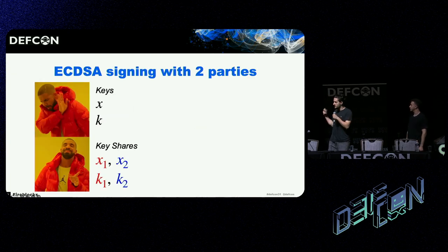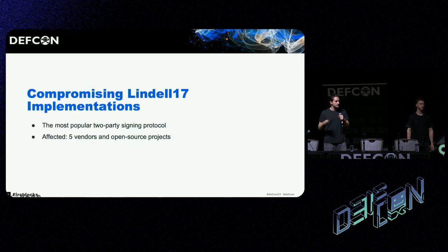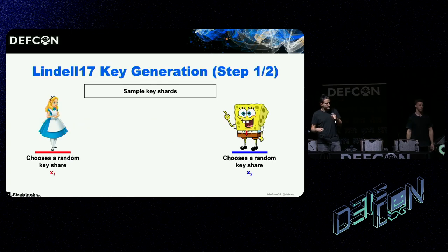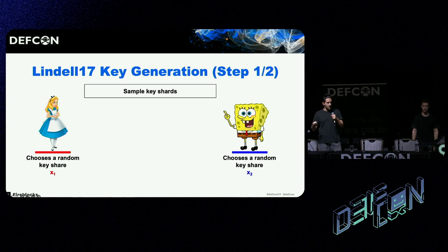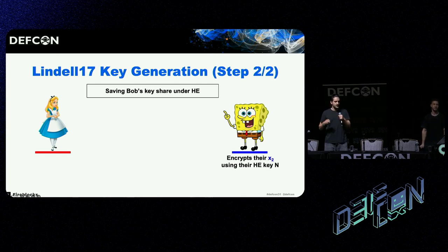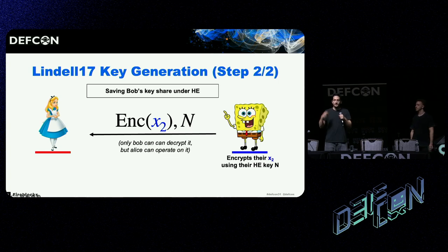What about multi-party, for example two parties? The idea is that instead of the secret material residing in one place, the secret material is split between the parties. Having covered the background, we can now move on to our first exploit: compromising the Lindell 17 protocol. In the key generation phase, the parties choose random key shares — x1 for Alice and x2 for Bob. Bob then encrypts his share under a homomorphic scheme he controls and sends that encryption to Alice. Only Bob can decrypt it, but Alice can operate on it, which is important for signing.